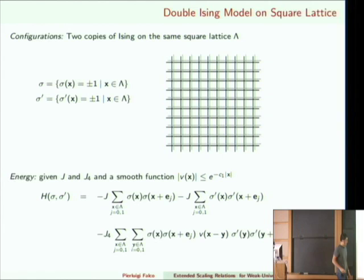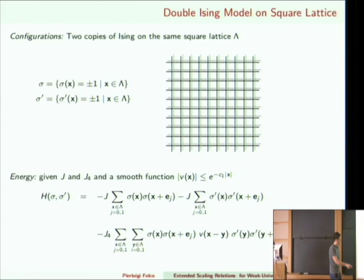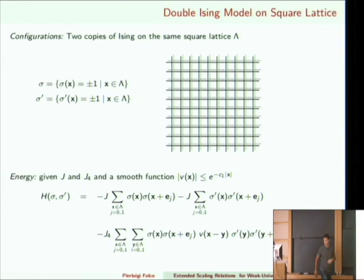Then you have an interaction between the two systems. The interaction is given by the product of spin along the same horizontal or vertical bond, times the product of spin prime along the same horizontal or vertical bond, with the function v in the middle, so that when x and y are far apart this contribution is smaller. You sum over all positions x and y.